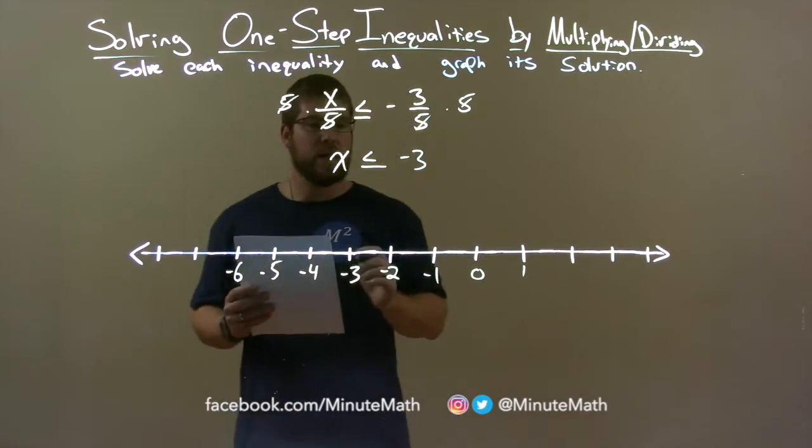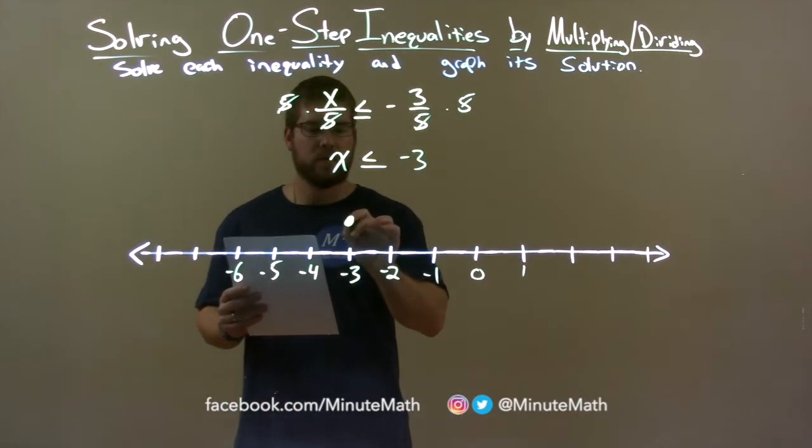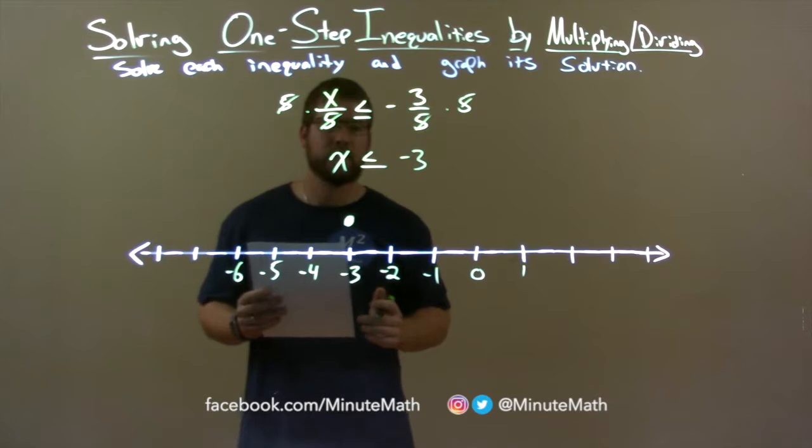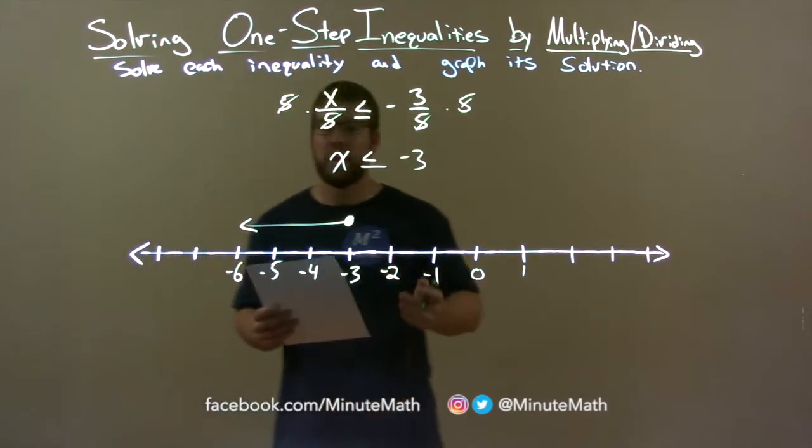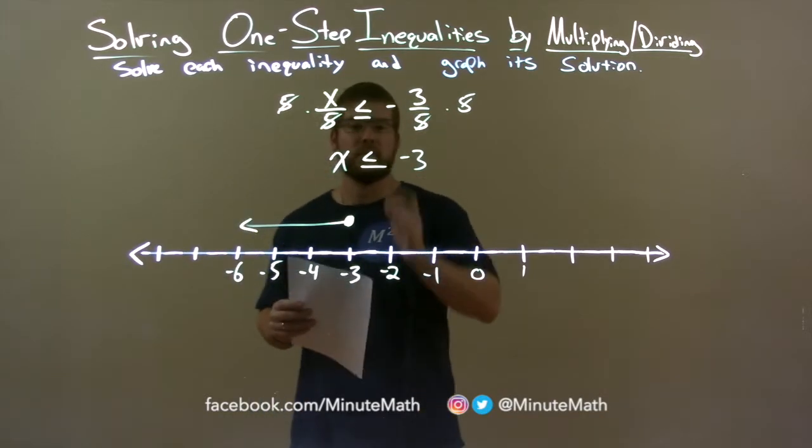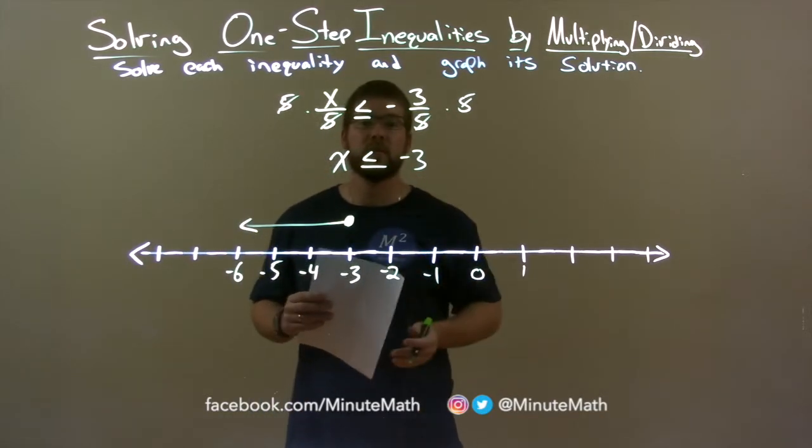Since x can equal negative three, we put a closed circle right here. X is also less than negative three, so the arrow goes to the left, and there we have it. Our graph matches our final answer, x is less than or equal to negative three.